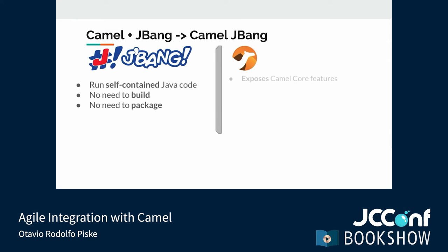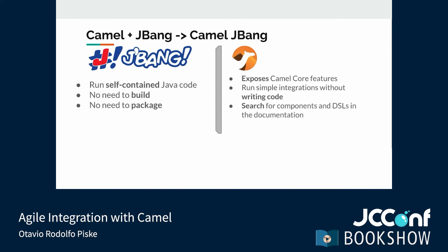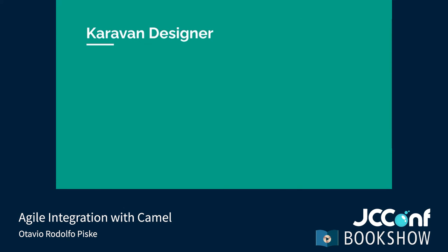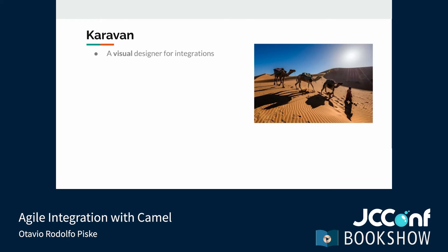CamelJBang is a subcomponent of CamelCore that uses JBang to expose some of the framework's functionalities. Among other things, it allows us to write simple integrations without writing code with the DSL, can resolve components automatically, and can leverage Camelets from the catalog. Karavan, the Camel integration designer, is the newest Apache Camel project. Karavan provides a visual designer for Camel integrations — with it, we can generate routes using the YAML DSL, which can be run by CamelCore-based applications or by CamelJBang.